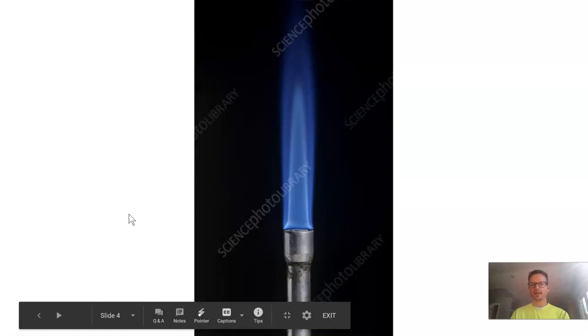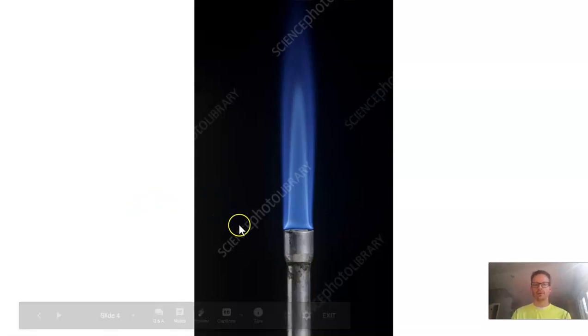So last thing real quick is just what are we looking for. When you have your flame perfect, after we start to adjust it, this is what I talked about with the inner and the outer cone. We have this blue inner cone right here, a little bit shorter, and then we have this bigger blue outer cone over here.